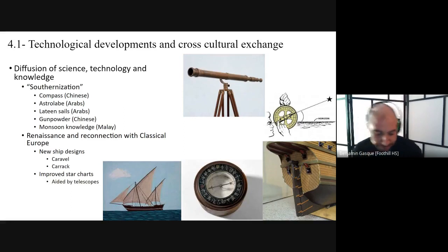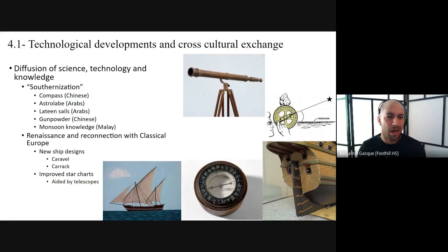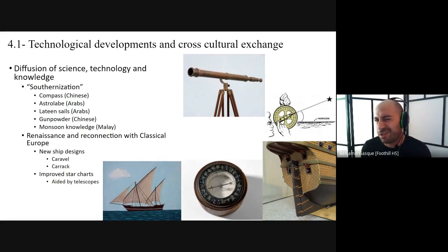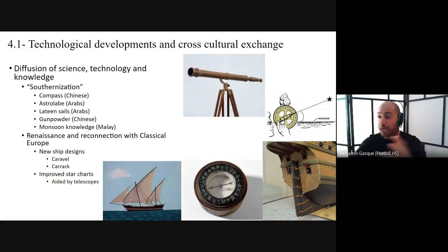We talked about the Chinese compass. This was invented in China around 200 BC — they originally used it for magic and fortune telling, but eventually began to navigate with it. It ends up in Europe in the 1100s, sometime in the 12th century when they think it first started being used there. It was transferred from the Chinese to the Arabs to Europeans.